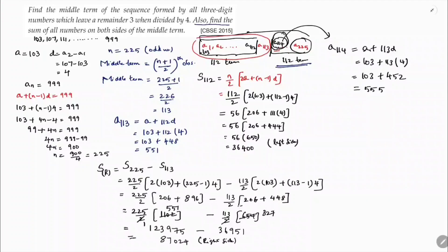With first term 555 (then 559, and so on), we again calculate S₁₁₂ since there are 112 terms on the right. S₁₁₂ = 112/2 × [2×555 + (112−1)×4] = 56 × [1110 + 111×4] = 56 × [1110 + 444] = 56 × 1554.